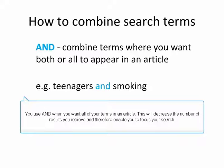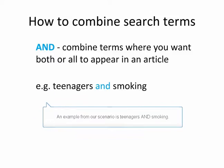You use AND when you want all of your terms in an article. This will decrease the number of results you retrieve and therefore enable you to focus your search. An example from our scenario is teenagers AND smoking.